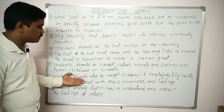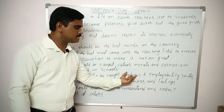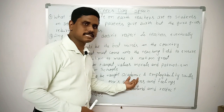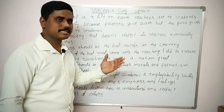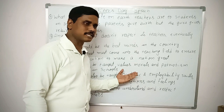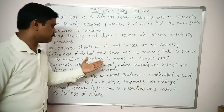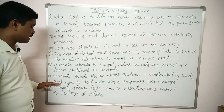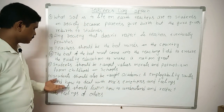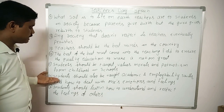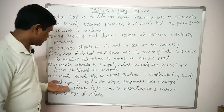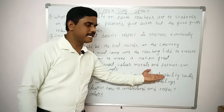Another sentence: 'Students should also be taught academic skills and employability skills.' Both are important. Academic skills mean marks, grades, and ranks. Employability skills include soft skills and hard skills. And beyond these two: 'Students should also be taught how to deal with one's emotions and feelings' — these are also important.